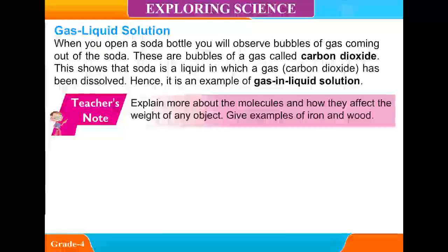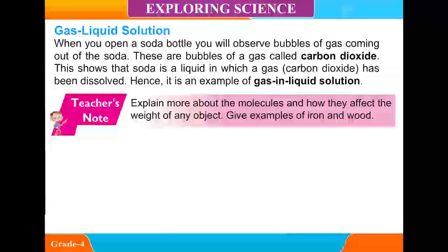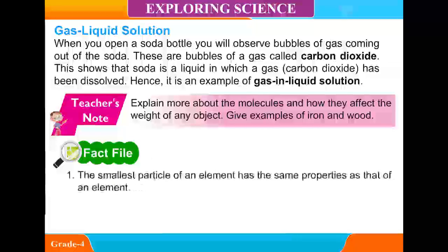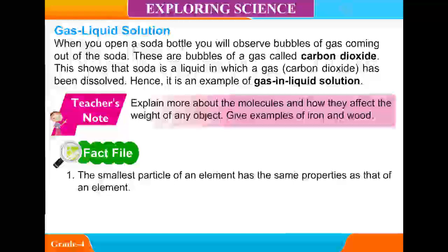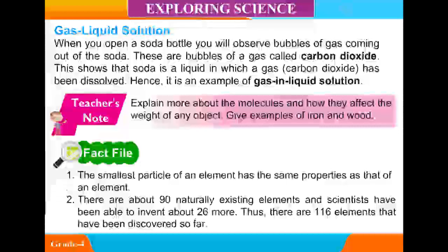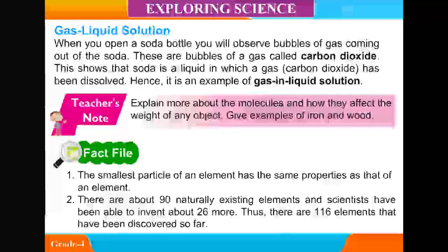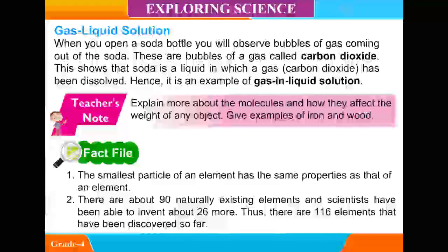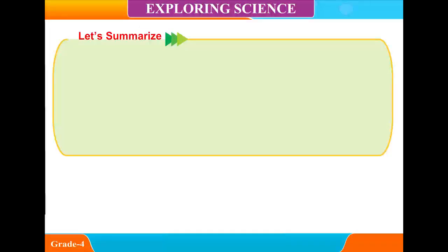Teacher's note: Explain more about the molecules and how they affect the weight of any object. Give examples of iron and wood. Fact: The smallest particles of an element have the same properties as that of the element. There are about 90 naturally existing elements and scientists have been able to invent about 26 more, making 116 elements discovered so far.